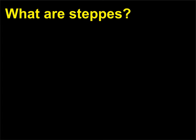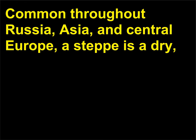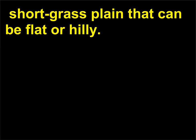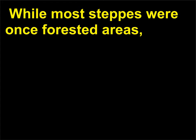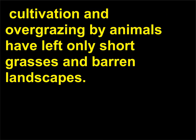What are steppes? Common throughout Russia, Asia, and Central Europe, a steppe is a dry, short grass plain that can be flat or hilly. While most steppes were once forested areas, cultivation and overgrazing by animals have left only short grasses and barren landscapes.